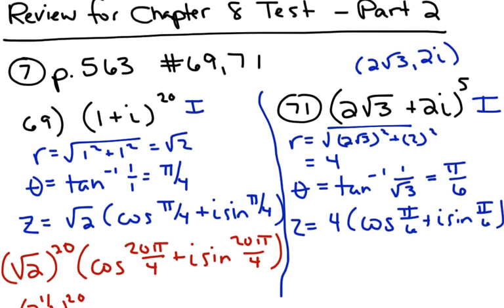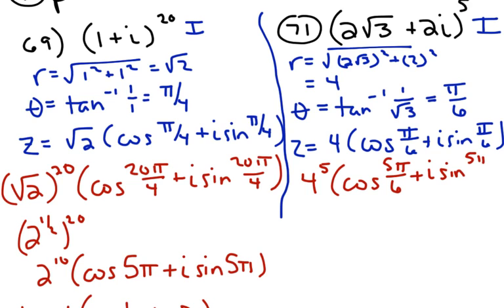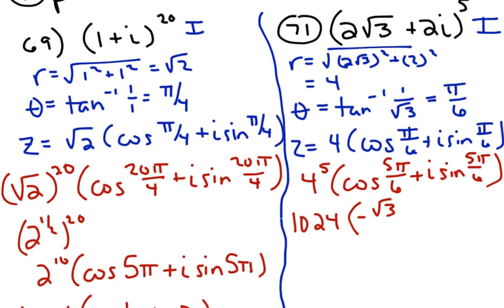Now we're going to raise everything to the 5th power. We're going to do 4 to the 5th, and then cosine(5pi/6) plus i sine(5pi/6). 4 to the 5th is 1024. The cosine of 5pi/6 is in quadrant 2, so it's negative — it's going to be negative √3 over 2.